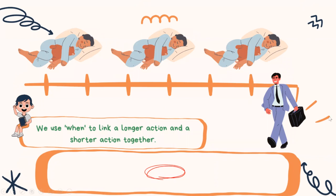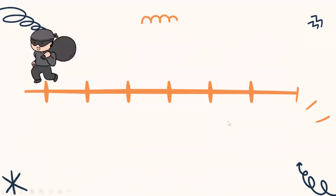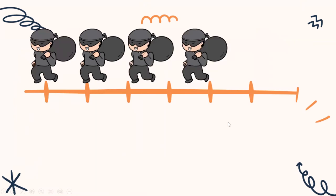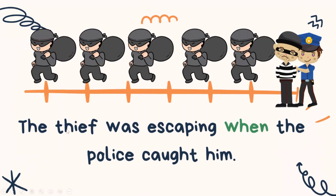Here's an example: a boy who is sleeping and daddy is coming home. So we can say: I was sleeping when dad came home. We use 'when' to link a longer action and a shorter action together. Another example: the thief was escaping when the police caught him.